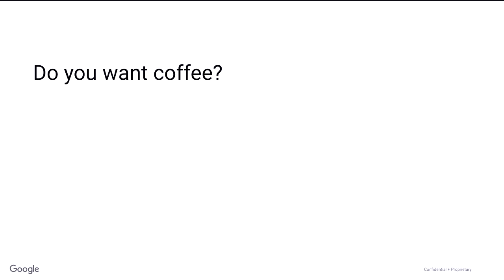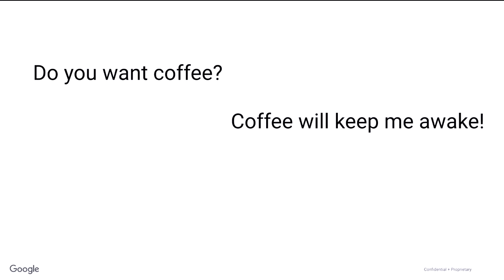Part of the reason is because language is complicated. Think about something that seems like a very simple question: do you want coffee? Let's say somebody asked me this and I said, coffee will keep me awake. How many people think this is no, I don't want coffee? How many think it's yes, I would like some? The answer of course is it depends. If you ask me in the morning and I've got a big deadline, it's probably a yes. If you ask me at bedtime, I'm probably telling you no. This is the kind of thing we do daily without thinking about it — very easy for us as humans, but very hard for computers.